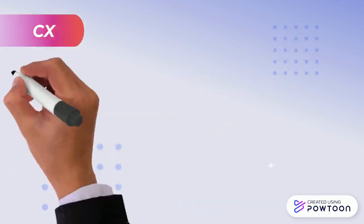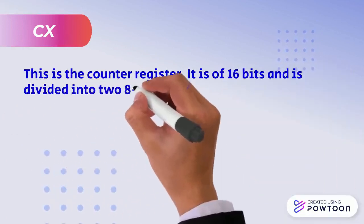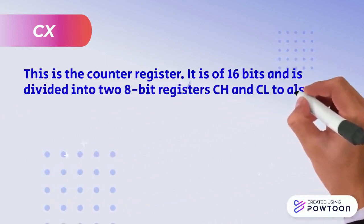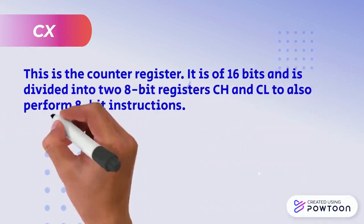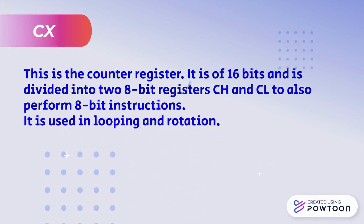The third register is CX. This is the counter register. It is of 16 bits and it is divided into two 8-bit registers CH and CL to perform 8-bit instructions. It is used in looping and rotation.